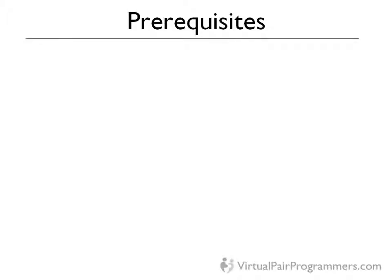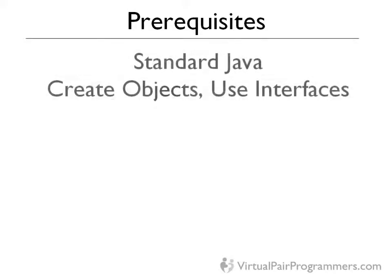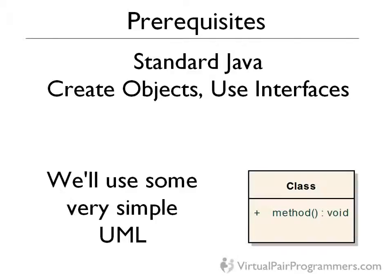The only prerequisites for this course are a reasonable working knowledge of standard Java. You'll need to be able to write classes, create objects, and you also need to know what interfaces are. If you're quite new to this, then you might find that this course is a great way of practicing the fundamentals. But if you need help, we have a Java fundamentals course that will set you up well. Occasionally I'll be using some very simple UML — the unified modeling language — but really nothing more than boxes representing classes and lists of methods inside. Apart from a few other minor symbols which I'll explain along the way, that's about as complex as I get.